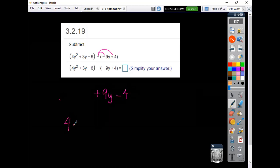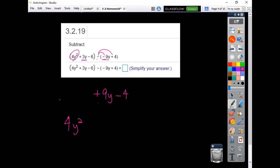So your 4y squared has nothing to combine with, so it's still just going to stay there. The 3y minus a minus, that'd be plus 9. So 3y plus that 9y would be a plus 12y.